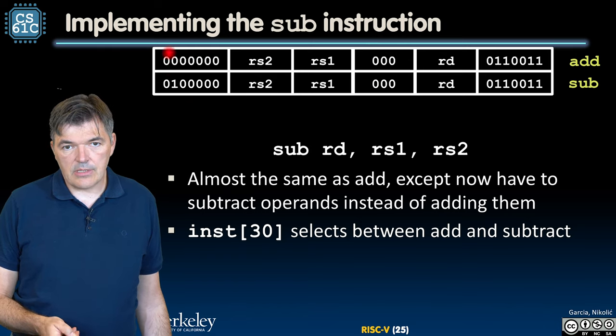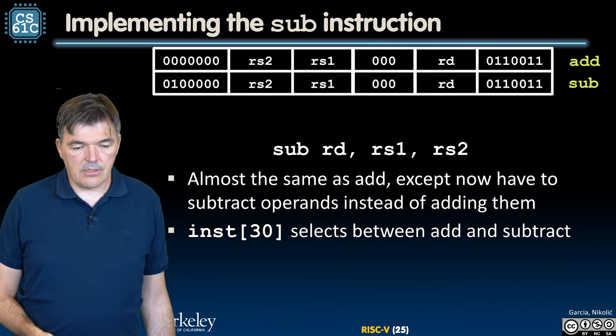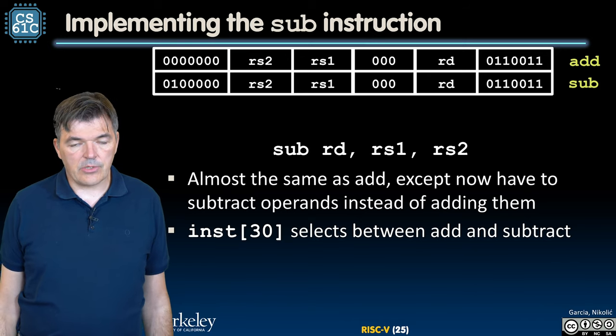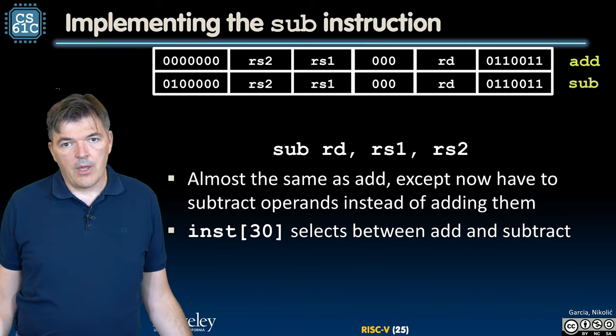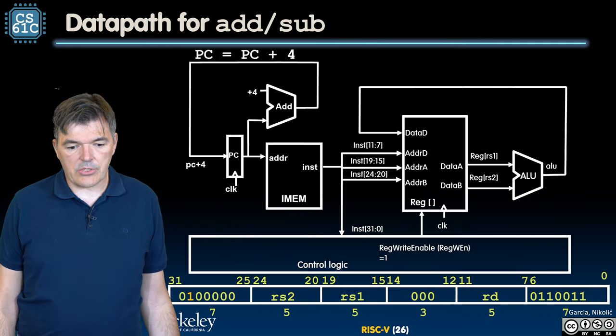There is only one difference that differentiates them. It is in the funct7 field, and that is instruction bit 30 that selects whether we are doing addition or subtraction. So let's see what we should do to our datapath to support subtraction.